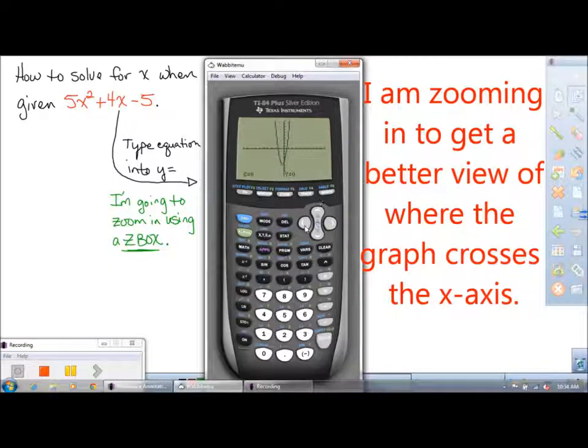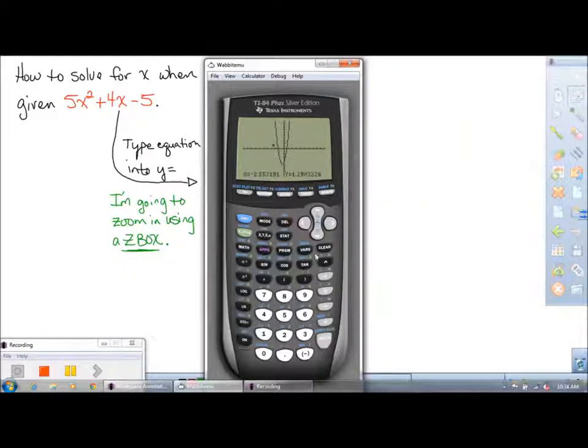I'm going to go under Zoom, Z-box. By doing this, it's going to allow me to create a box that will zoom in to those x-intercepts. I'm also going to include the vertex as well, so I can see my cursor moving from one side of the equation to the other.